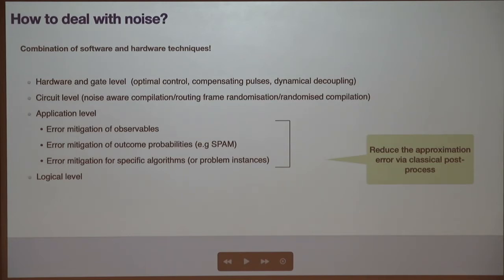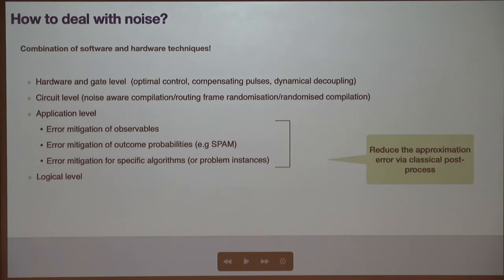You can also employ techniques for specific types of algorithms. For example, if you know the circuit or algorithm has a particular symmetry, you can employ some post-selection to map it to the right Hilbert space. One word of warning: these techniques are not meant to produce states with better fidelity — they are meant to reduce the approximation error in, for example, the expectation value of an observable by employing classical post-processing.